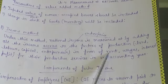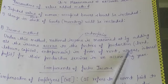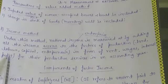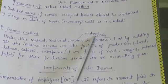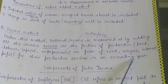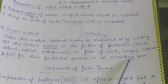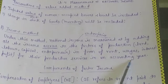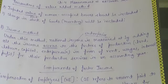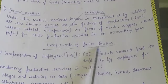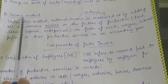Factors of production earn income in specific forms: rent is related to land, wages are related to labor, interest is related to capital, and profit is related to the entrepreneur or enterprise. These incomes are earned for their productive services in an accounting year — that is, the financial or fiscal year, from 1st April to 31st March. These components make up factor income under the income method.